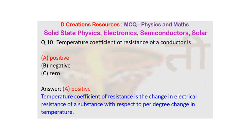Now, in case of a conductor, for example, metal, you will see that as you are increasing the temperature, the resistance is going to increase. So, obviously, the temperature coefficient will be positive. So, that is the answer.